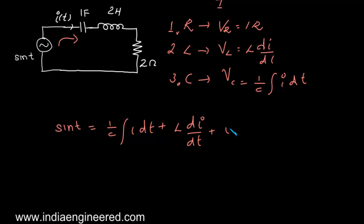The value of capacitance is 1, so we have integral i dt plus 2 di/dt plus 2i. Now we are asked to find the differential equation, but we have an integral sign here, so we have to remove it. Just differentiate it once more.